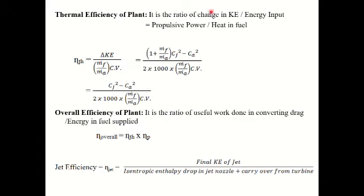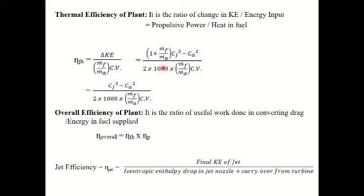Thermal efficiency of the plant is the ratio of change in kinetic energy divided by energy input. Energy input is the energy obtained from the fuel: mass of fuel multiplied by the calorific value, which for 1 kg of air is mf/ma × CV. The change in kinetic energy is (1 + mf/ma) × Cj² minus CA², divided by 2, over mf/ma × CV. A factor of 1000 is used in the denominator to maintain consistent units in numerator and denominator.